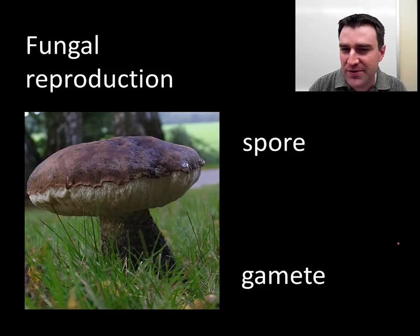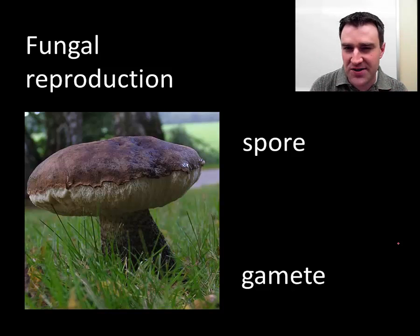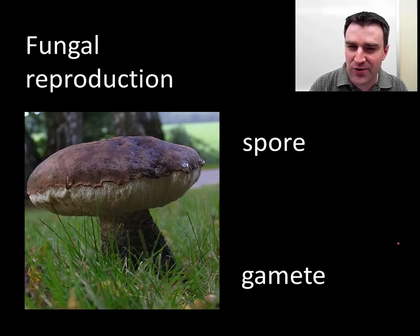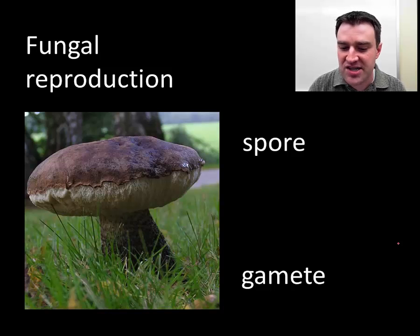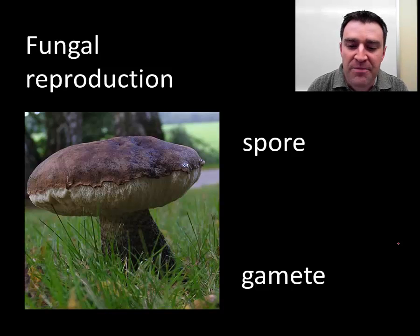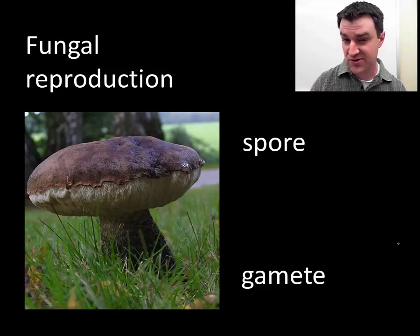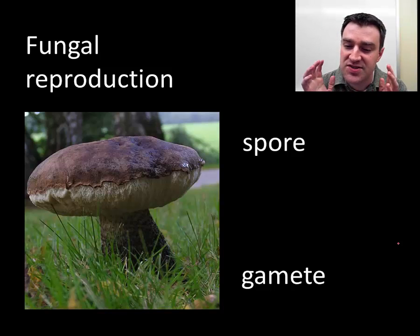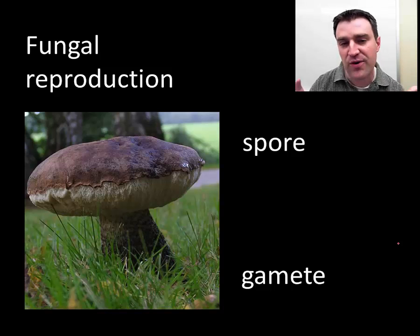Let's start with fungal reproduction — spores and gametes are also produced by plants, but I'm going to emphasize fungi here. I just want to briefly introduce the difference between spores and gametes; they're both reproductive cells that reproduce new offspring. The basic difference between them is that spores do not join with another spore in order to produce a new offspring.